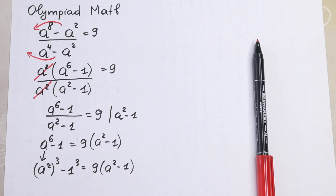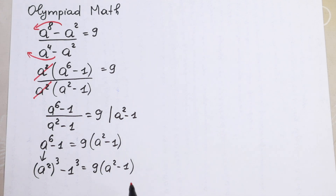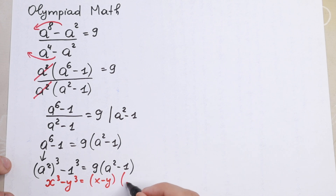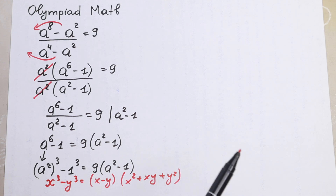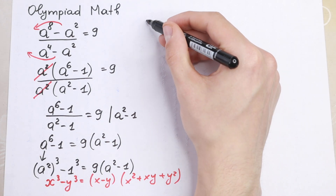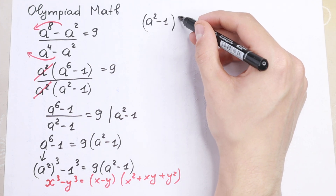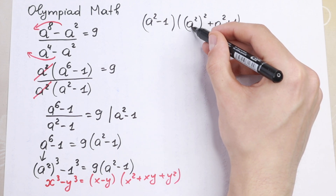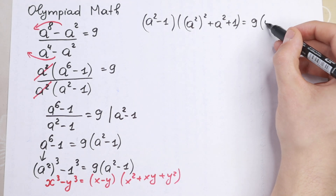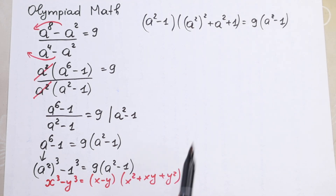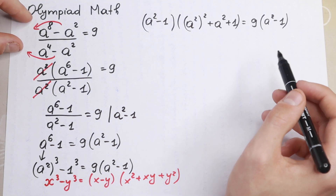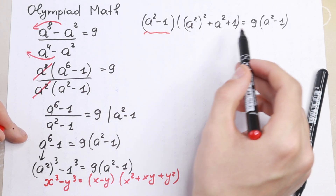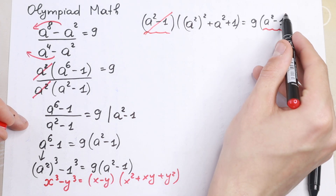We can apply the difference of cubes formula: x³ - y³ = (x - y)(x² + xy + y²). Using this formula on the left side, we get (a² - 1) times (a⁴ + a² + 1), equal to nine times (a² - 1). We see the same factor (a² - 1) on both sides, so we can cancel it.